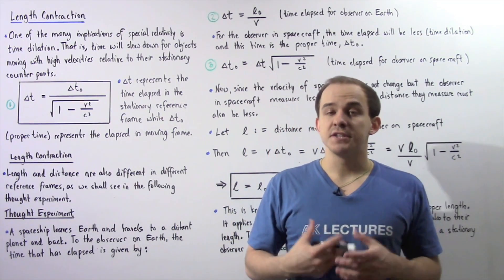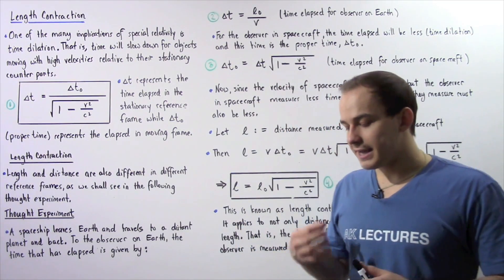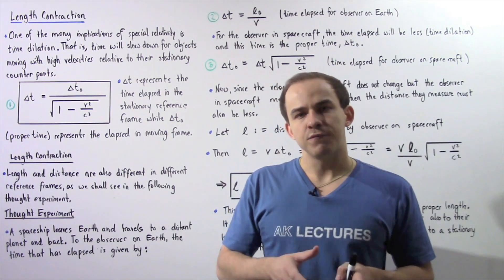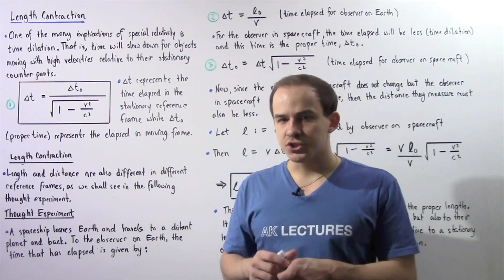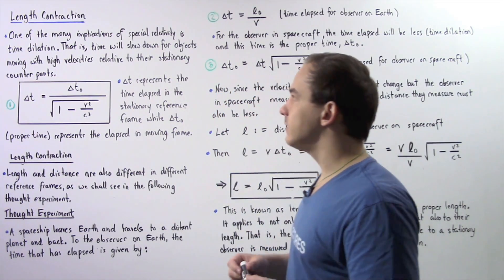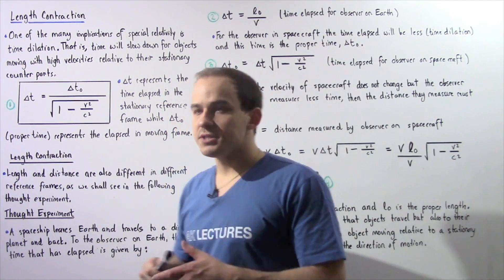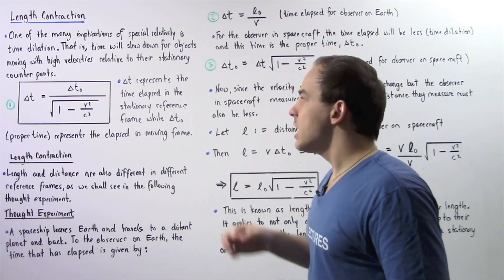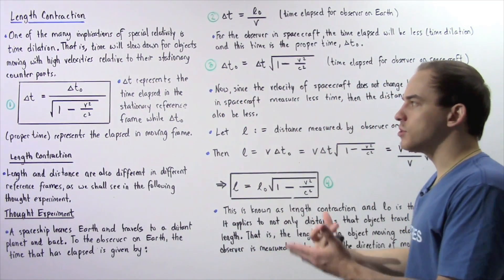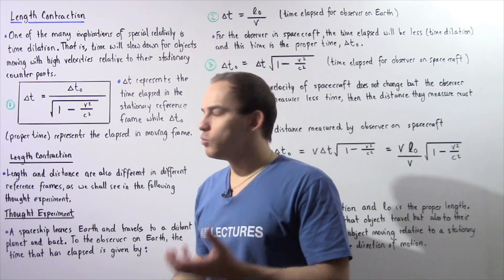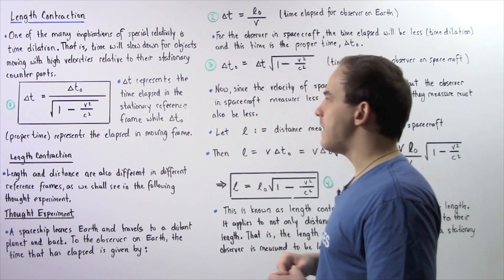One of the many important implications of the special theory of relativity was time dilation. Time dilation is the idea that time will slow down for an object that is traveling with a very high velocity relative to its stationary counterpart. This is given by equation one, where delta t represents the time elapsed for the stationary observer, delta t naught represents the time elapsed for the observer inside the moving object, v is the object's speed, and c is the speed of light in a vacuum.